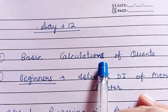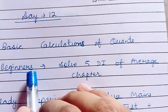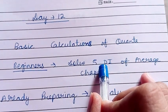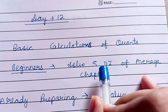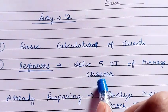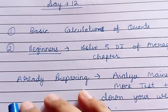First of all, today there is basic calculation of quants for both. Then for the beginners, you will solve five DI's of average chapter. You will find the DI's on YouTube and any other source you can use, but please try to solve five DI's based on average chapter as you have already completed this chapter.